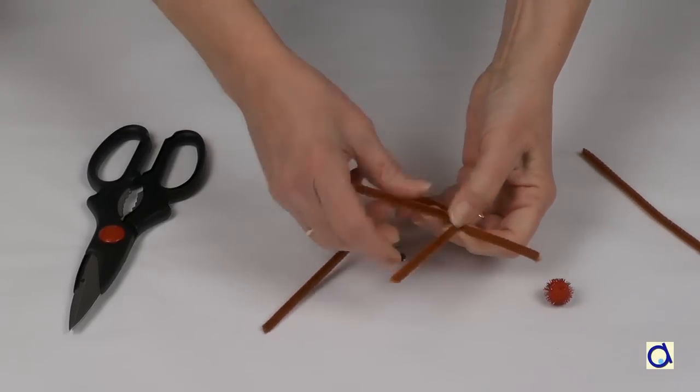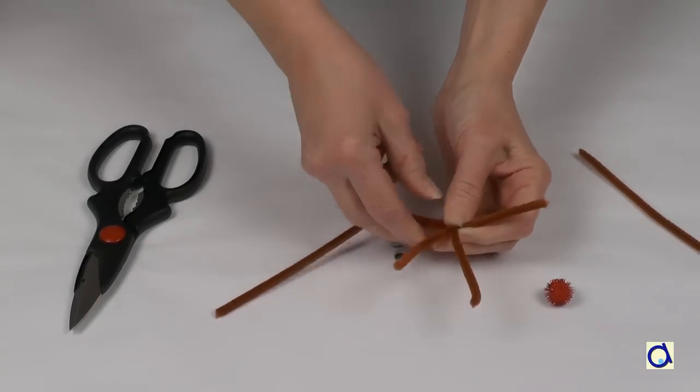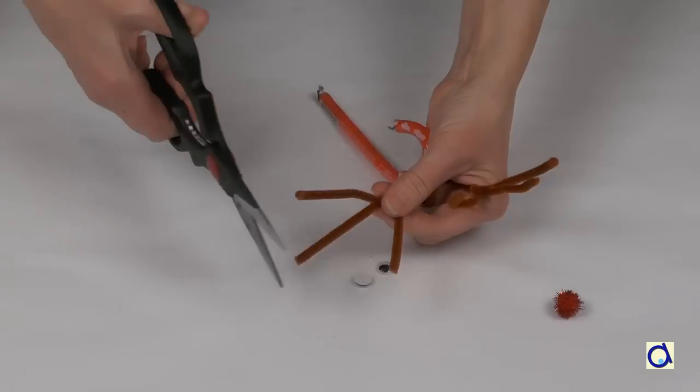Take one half and attach it to one side of the pipe cleaner that is already attached to the candy cane and do the same thing on the other side.